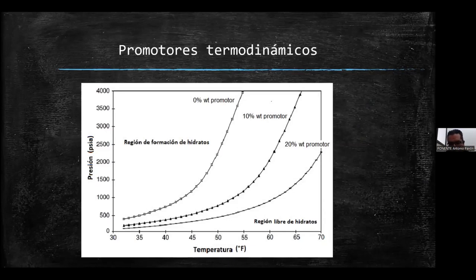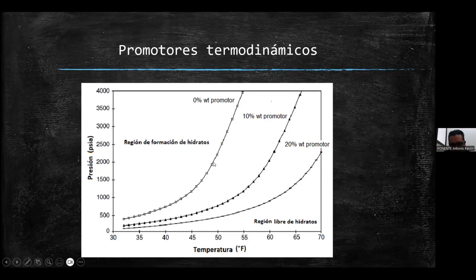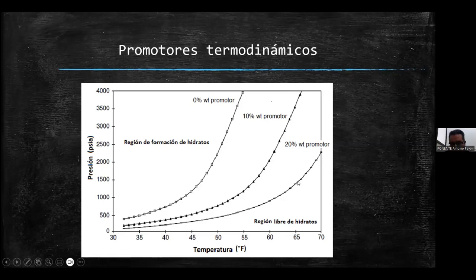Los promotores termodinámicos cambian las condiciones de presión y temperatura a las que se forma el hidrato. En el diagrama de presión contra temperatura, la curva de equilibrio hidrato-líquido-vapor muestra que por arriba hay formación de hidrato, a presiones altas y bajas temperaturas. Si agregamos un 10% de un promotor, la curva se recorre hacia la derecha, a presiones un poco más bajas y temperaturas más bajas. Con un 20%, la curva se desplaza todavía más, hacia temperaturas más altas y presiones más bajas.